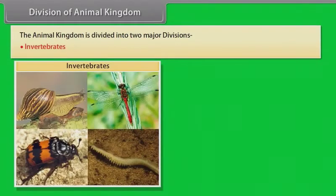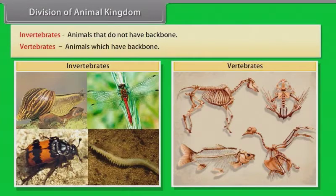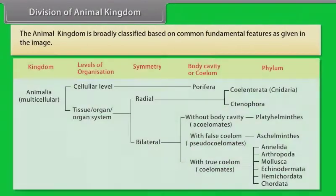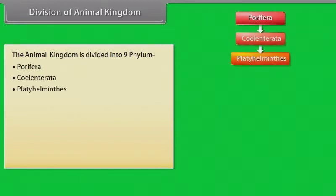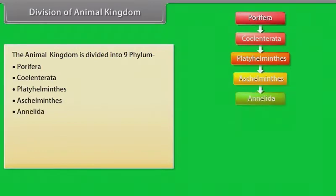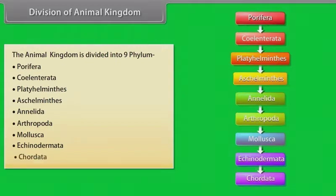The animal kingdom is divided into two major divisions: invertebrates and vertebrates. Invertebrates are animals that do not have a backbone. Vertebrates are animals which have a backbone. The animal kingdom is broadly classified based on common fundamental features. It is divided into nine phyla: Porifera, Coelentrata, Platyhelminthes, Aschelminthes, Annelida, Arthropoda, Mollusca, Echinodermata and Chordata.